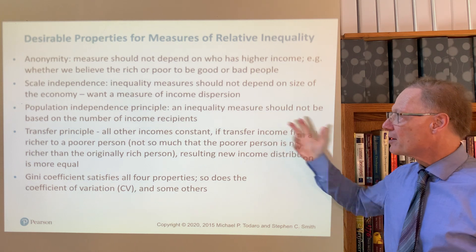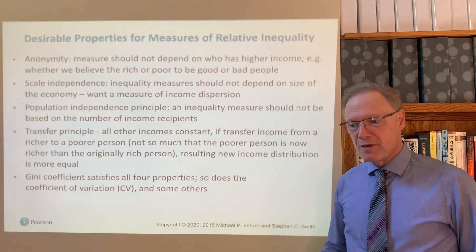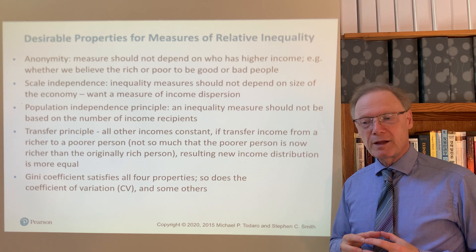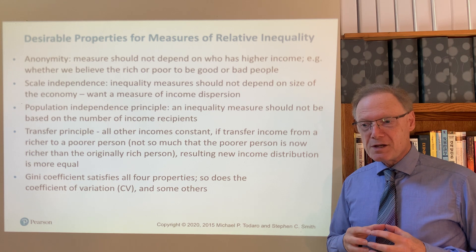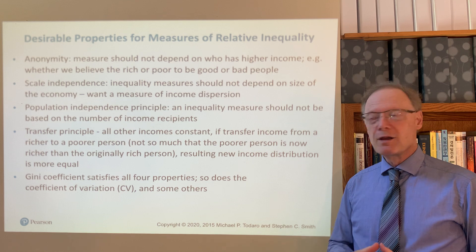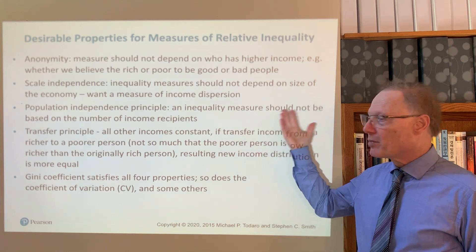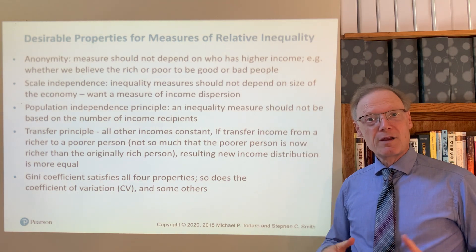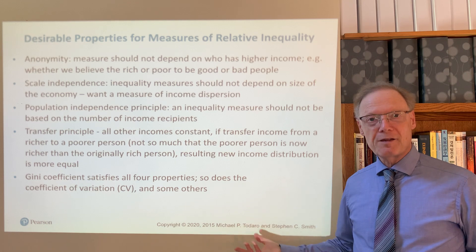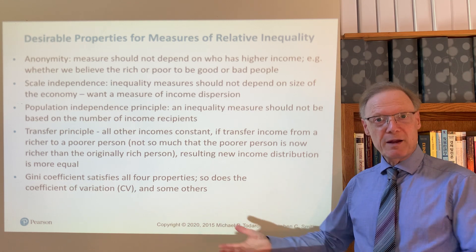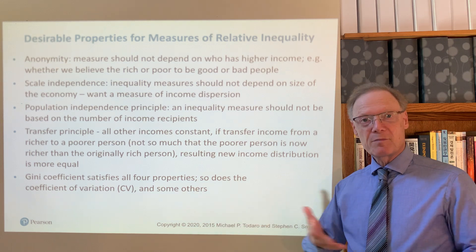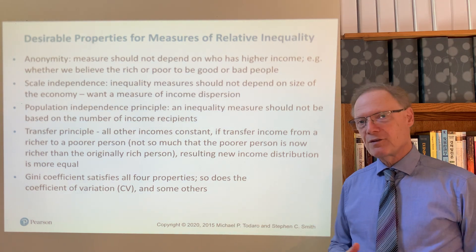The third is population independence. This means that the way we measure inequality should not have anything to do with the number of people under consideration. For example, India should not appear either more or less unequal just because it has a lot of people in comparison to other countries, or in comparison to India 20 years ago.